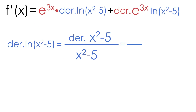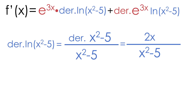The derivative of x squared minus 5 is just equal to 2x. So in the top of our fraction we'll have 2x, and in the bottom of the fraction we'll have x squared minus 5. We have officially taken the derivative of our natural log: 2x over x squared minus 5.